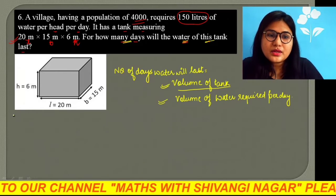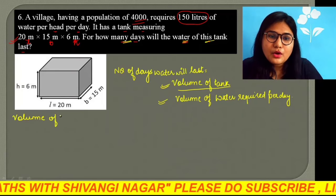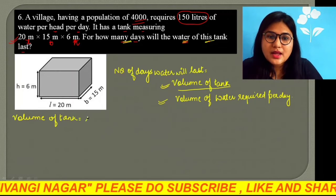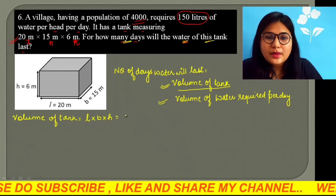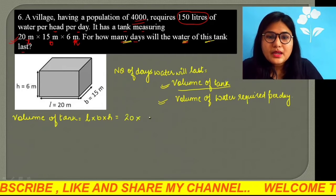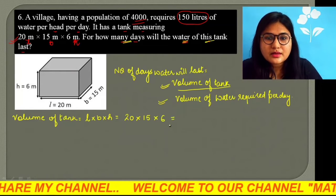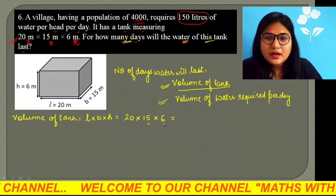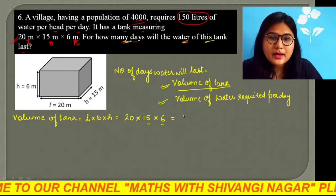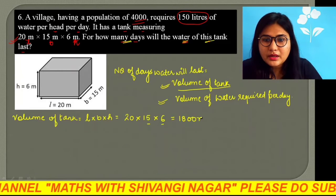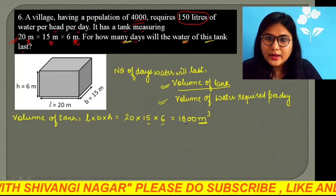First of all, we will find the volume of tank. Volume of tank will come from L into B into H. L's value is 20, B's value is 15, and H's value is 6. So, 15 into 6, how much? 90. 90, when you multiply 20, you will get 1800 meter cube. So, what have you got? Volume.